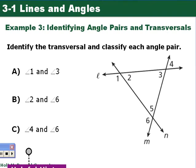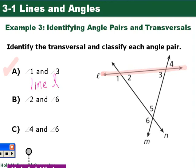Our last example is identifying angle pairs and their transversal. Given angles 3 and 1, we want to figure out what line they both share. Angle 1 and angle 3 are both on line L, so line L is our transversal. Angle 1 and angle 3 are on the same side of the transversal and in the same corresponding location, so these are corresponding angles.